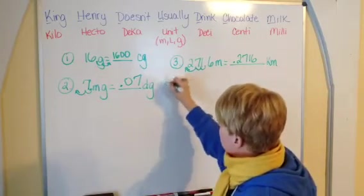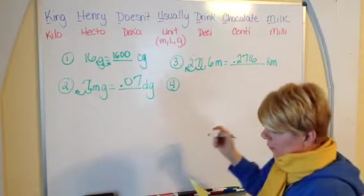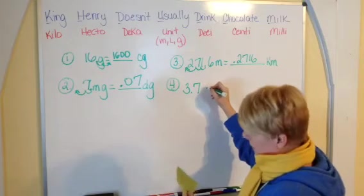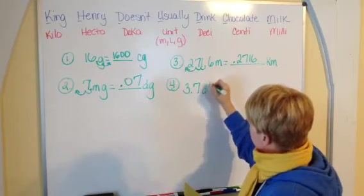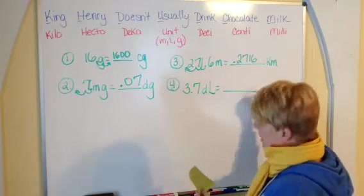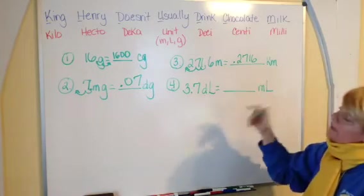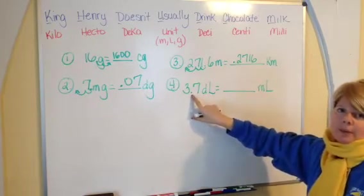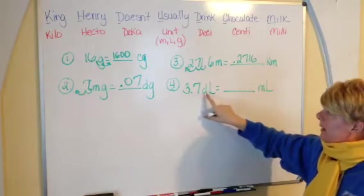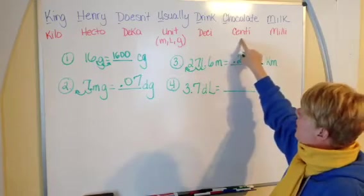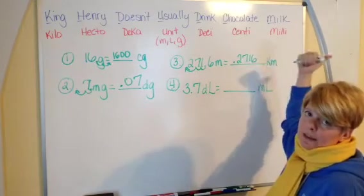Number four, we have 3.7 deciliters, and we are going to take that to the milliliters. So again, we've already got our decimal point established, we're going to use that. Deciliters is here, we're going to milliliters. That is one, two places to the right.